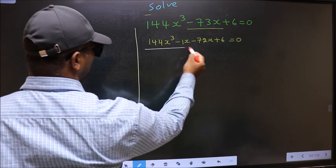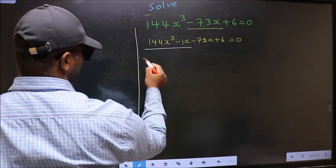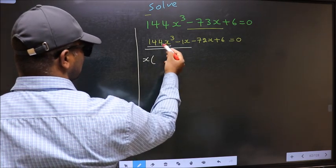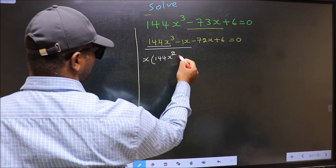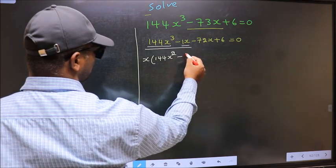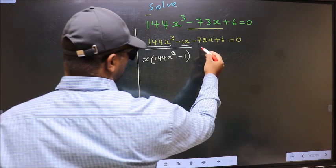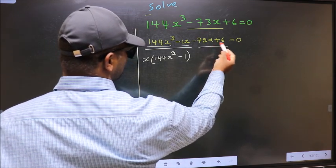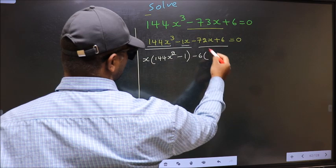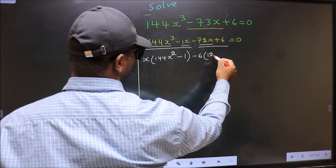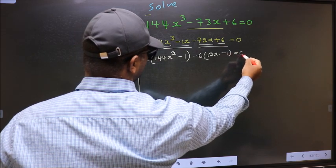What can be taken out common from the first two terms is x. Taking x out, you get 144x² minus 1. In the same way, what can be taken out common from the last two terms is minus 6, giving 12x minus 1, equal to 0.